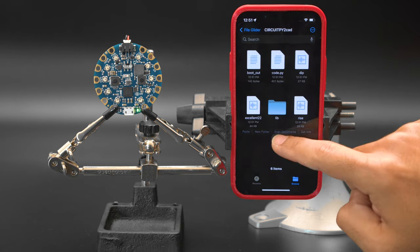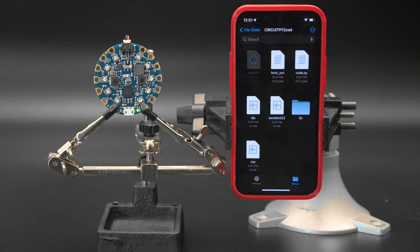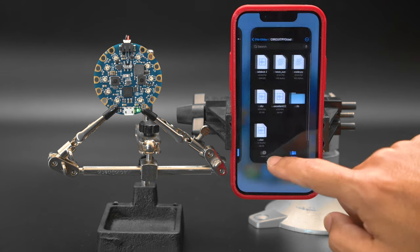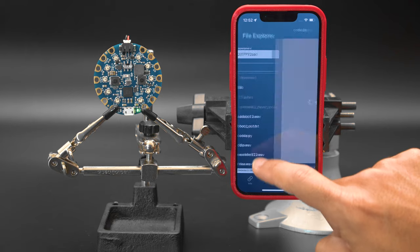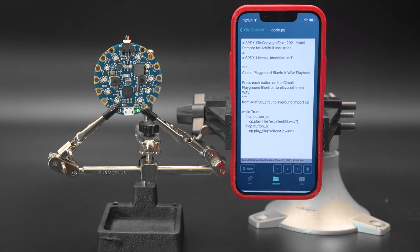Here, we can tap and hold to paste our new audio file to the CircuitPlayground Bluefruit. Now, we can quickly change the code and playback this new audio file by pressing one of the buttons on the board.